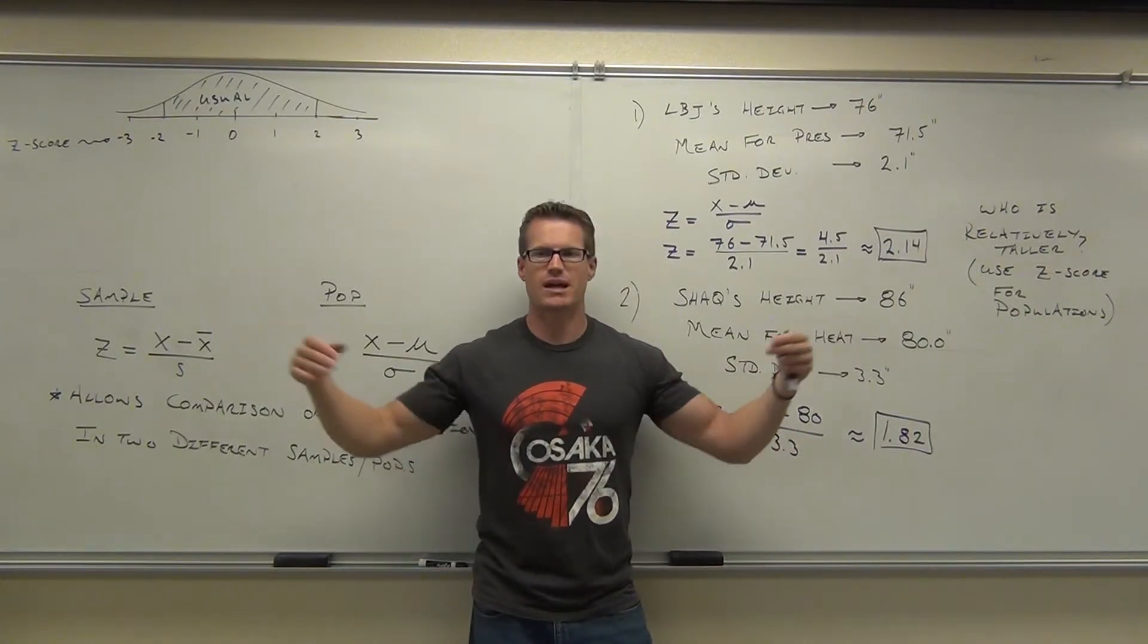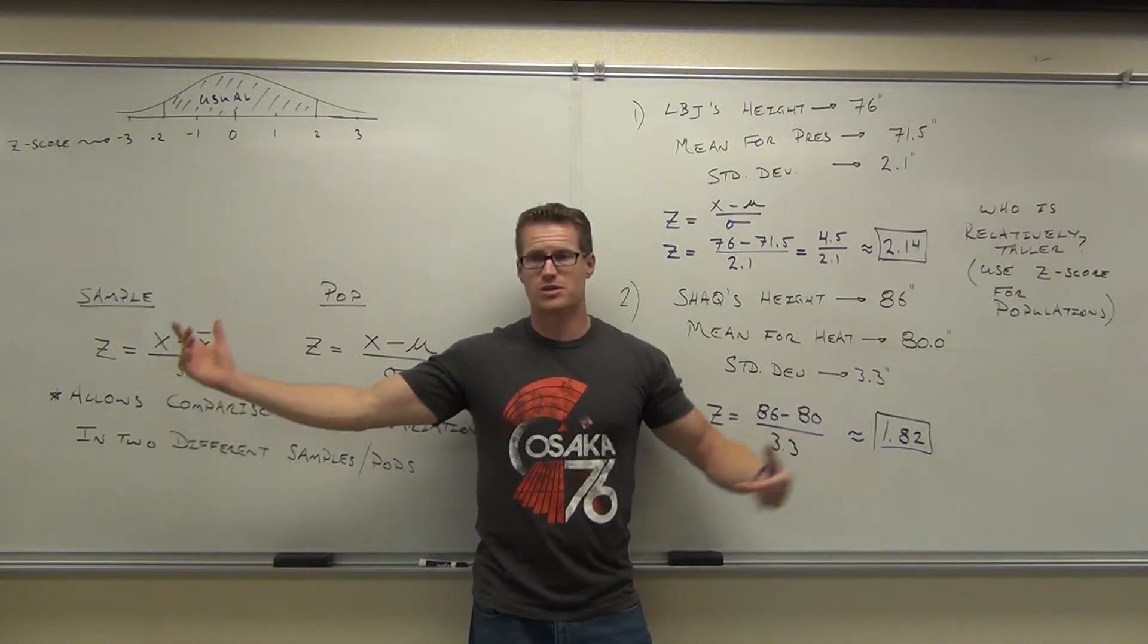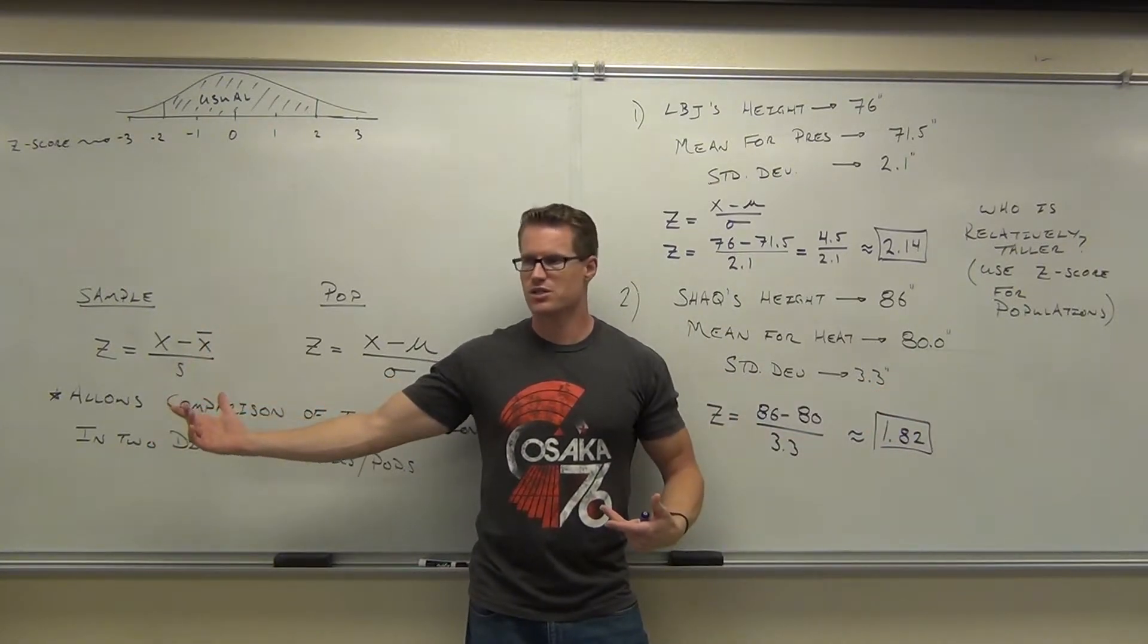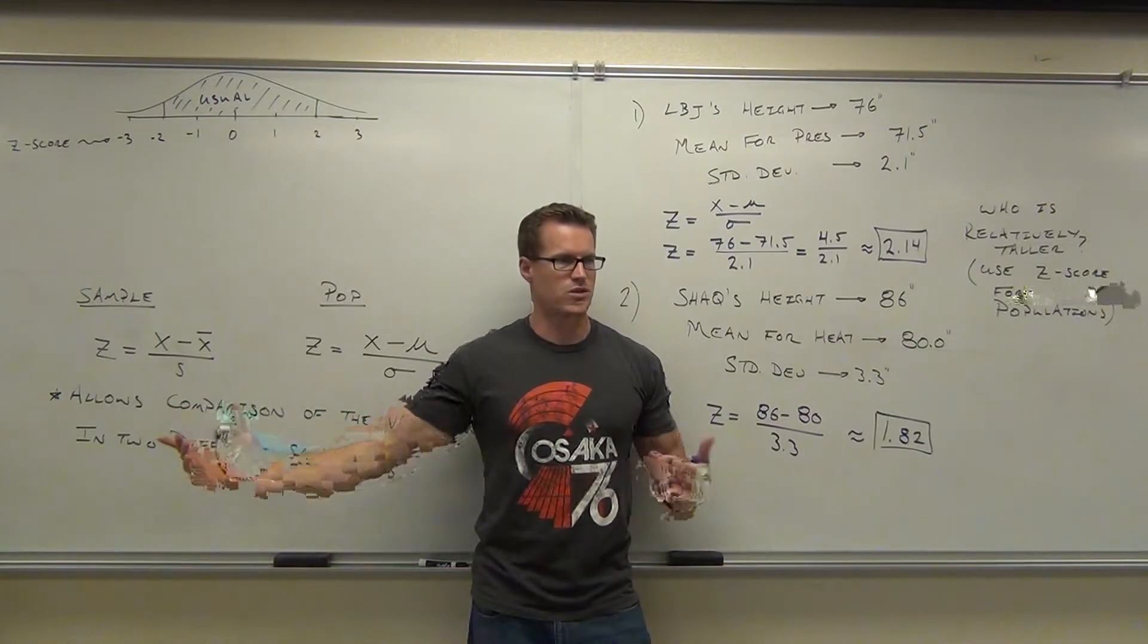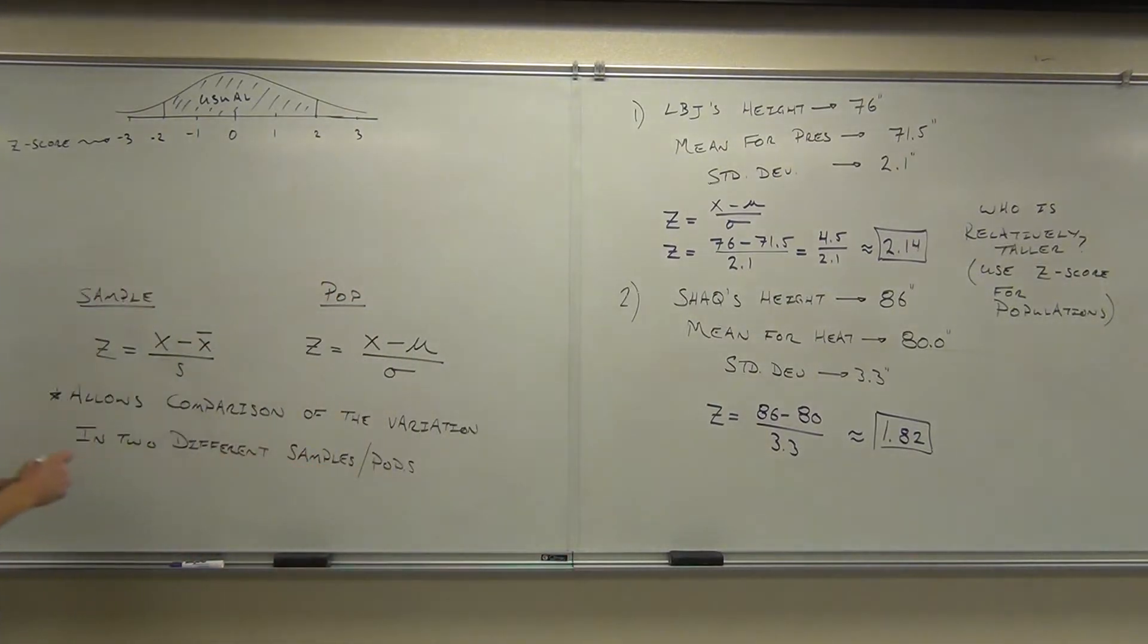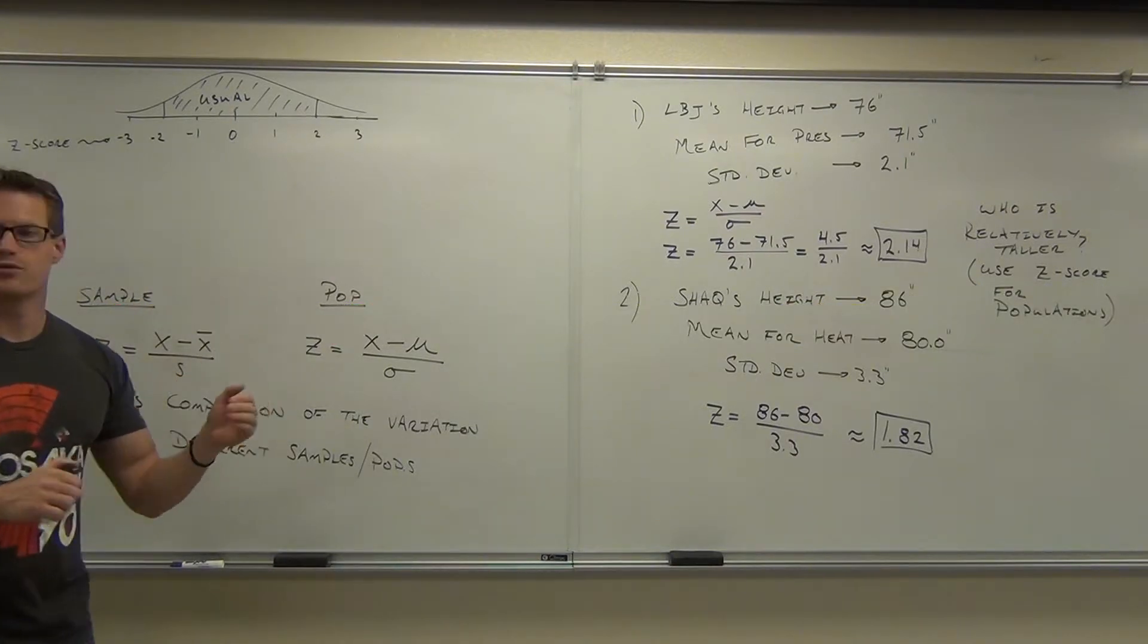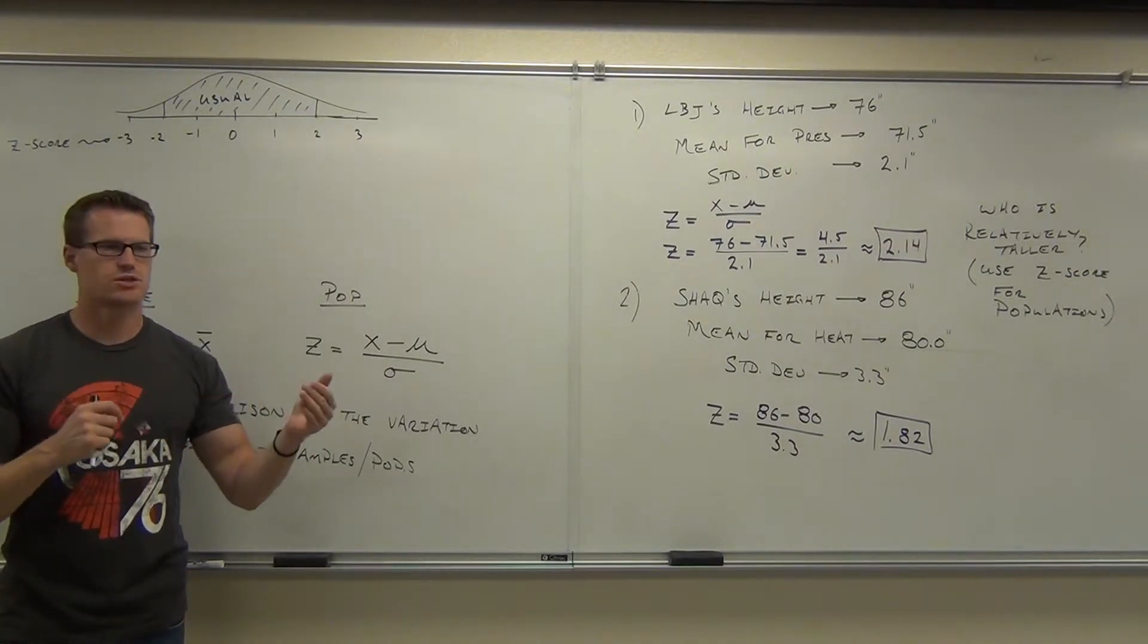What that implies, because it's the same information, is that any Z score, listen carefully, any Z score between the range of negative two and two is going to be considered usual. Any Z score outside of that range would be considered unusual. It's the rule of thumb. It's just applied to Z scores now. We haven't changed the rule. We just now know the word Z score. Are you seeing the cross over there?